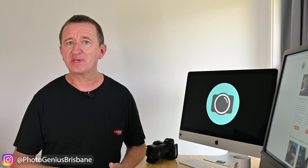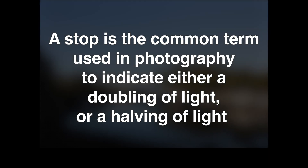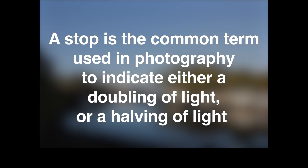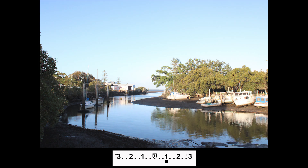The best place to begin is to understand what stops mean in photography terms. A stop is the common term used to indicate either a doubling or a halving of light. An increase in exposure of one stop means that twice as much light is recorded by the camera, so the image will be one stop brighter. Another increase of a stop will mean the light is again doubled.